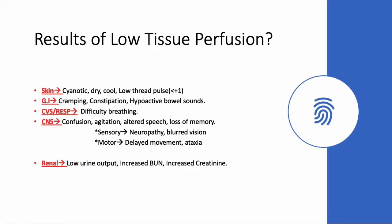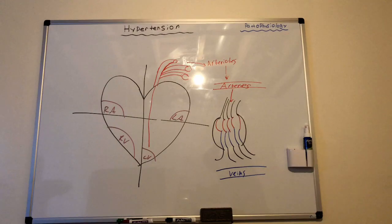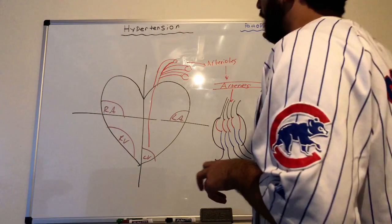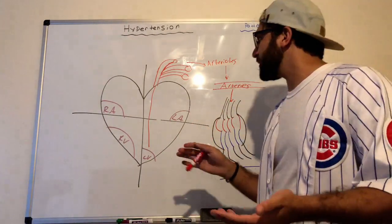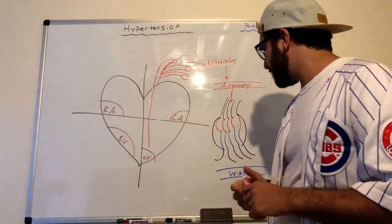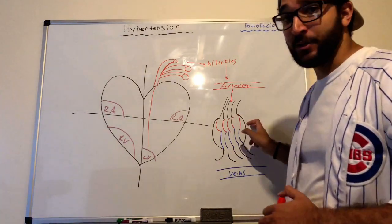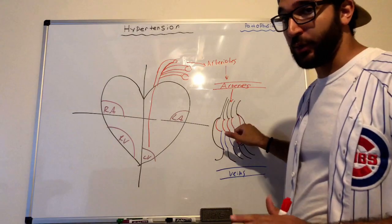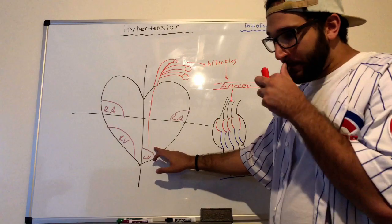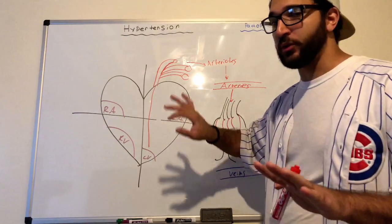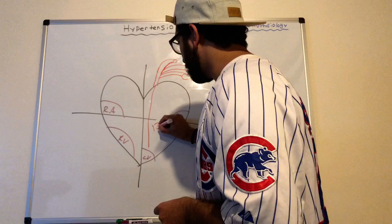Low tissue perfusion affects different organ systems including the skin, GI tract, cardiovascular system, CNS, and renal system. Another important way blood pressure can increase is through damage to the capillary system. Normally, the left ventricle pushes blood out at 120 over 80 in a healthy adult.